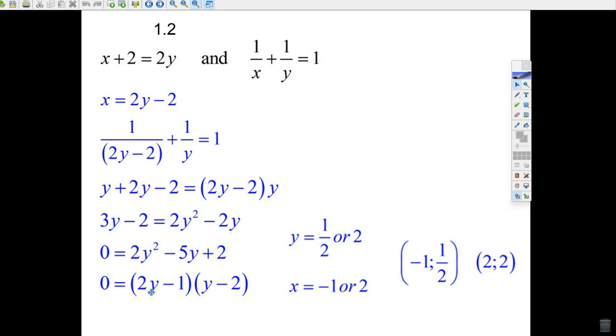Well, 1 over 2, and change the sign there, a half, 2 times a half minus 1 is one of your solutions for y. And 2 minus 2 clearly equals 0. There's your two y values.